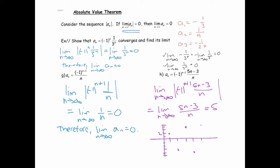And since the terms are not approaching one unique value, we would say that this sequence diverges. So if you're going to use that theorem, use it very carefully. Make sure that the absolute value of the terms does in fact go to zero.